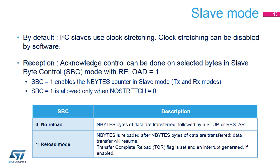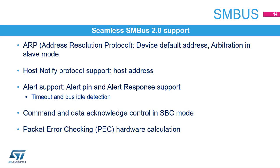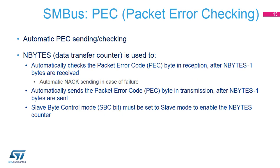In SMBus mode, slave byte control mode is used in transmission for sending the PEC or packet error code bytes. The I2C peripheral provides hardware support for the SMBus. The SMBus address resolution protocol is supported through the device default address and arbitration in slave mode. The host notify protocol is supported with host address support. The alert protocol is supported through the SMBus alert pin and alert response address. The SMBus clock low timeout and cumulative clock low extend times can be detected with a programmable duration. The bus idle condition can be detected with a programmable duration. Command and data acknowledge control is supported through slave byte control mode. The packet error code or PEC byte is calculated by hardware and is automatically sent in transmission and checked in reception.